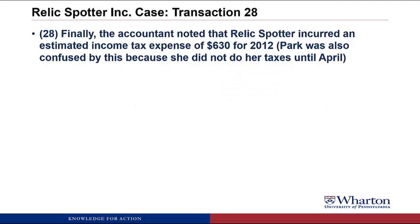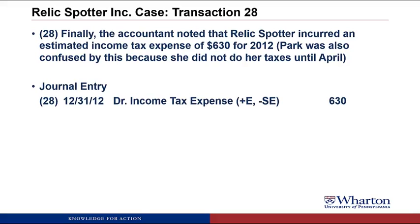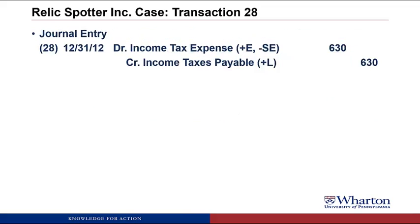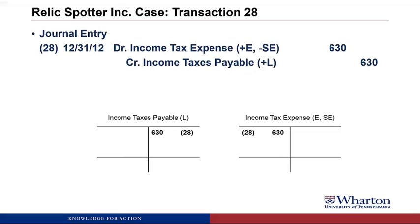Transaction 28. Finally, the accountant noted that RelicSpotter incurred an estimated income tax expense of $630 for 2012. Park was confused by this because she did not do her taxes until April. We do need an adjusting journal entry here. Even though Park's not going to file her taxes until April, she's incurred taxes by operating the business during 2012, and we have to show an expense because that's a cost of doing business. So we debit income tax expense for $630. This is money that we owe the government — that's an obligation — so we credit a liability, income tax payable, for $630. Then we post this to T-accounts. We create an income tax payable to show on our balance sheet that we owe the IRS $630 of taxes as of December 31, and we create an income tax expense account with a debit balance.